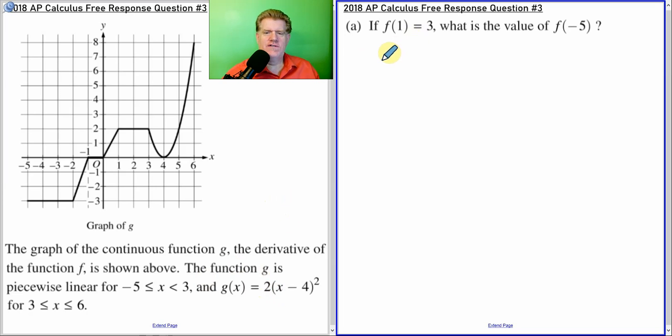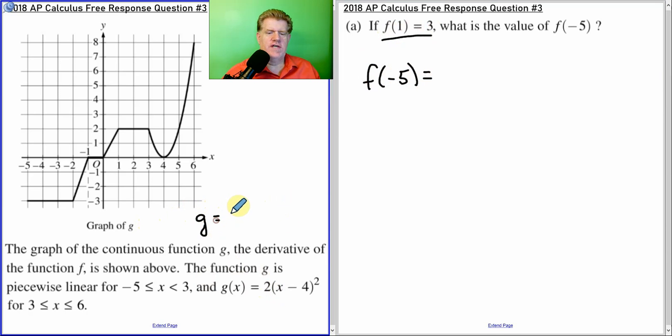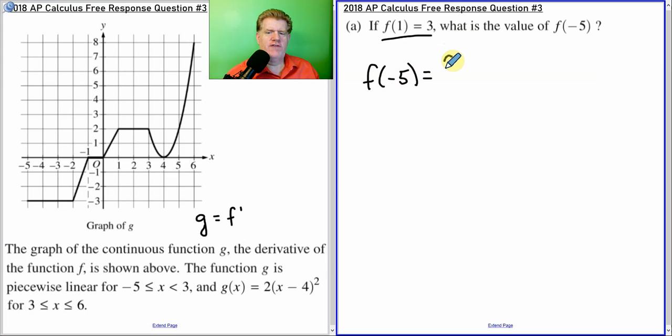If f of 1 equals 3, what is f of negative 5? Now, remember, f of negative 5, G is the derivative of f. So, G actually equals f prime. So, if I want to get f from f prime, I have to look at the integral. So, we're given the starting value of 1. So, we're starting from 1, and we're going back to negative 5.